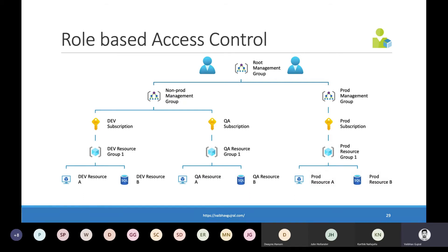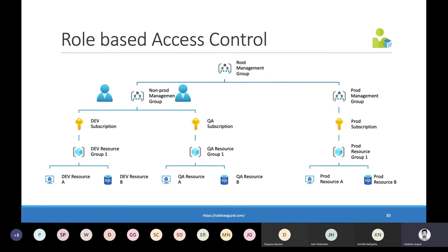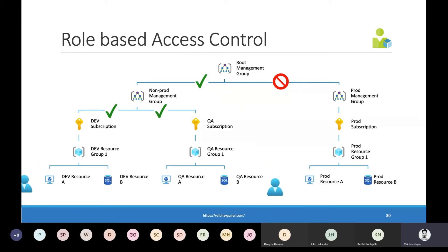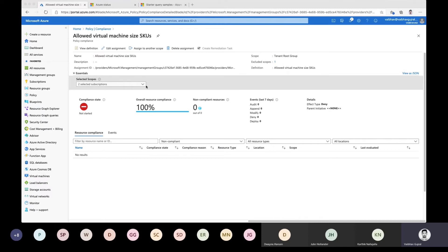Similar to policies, the roles you assign at a particular scope are inherited by the underlying resources. If a user is assigned a role in the root management group, the permissions are inherited by all the underlying scopes. If you assign permissions at the non-production management group, the permissions are inherited down in that hierarchy but not in the production management group. The more refined the scope, the more targeted the permission assignment — for example, permissions applied at the subscription level are not inherited by any other subscriptions in the same or different management groups.